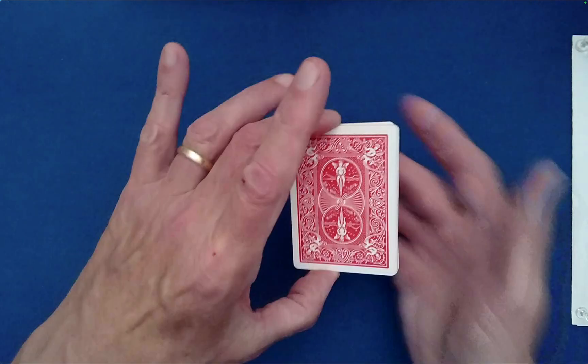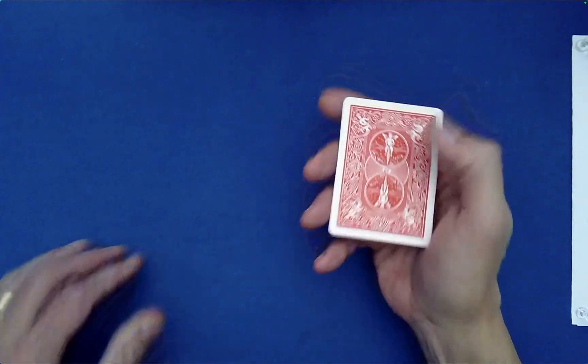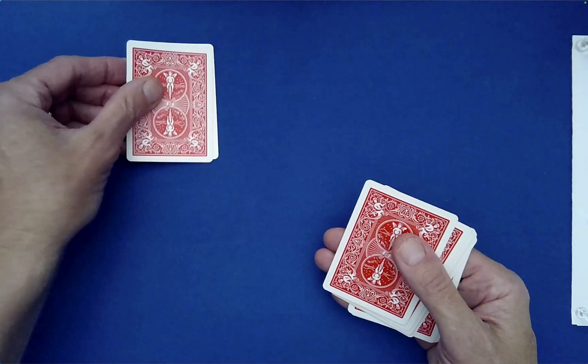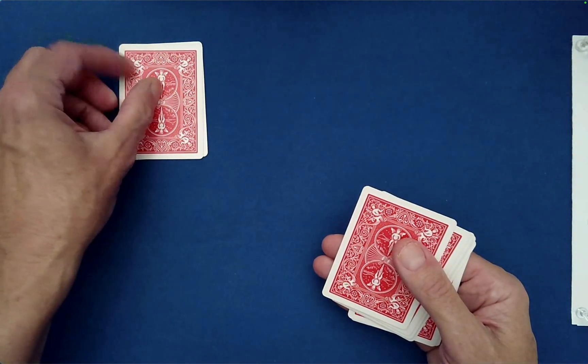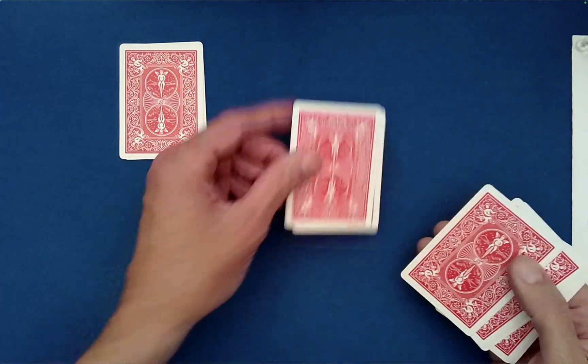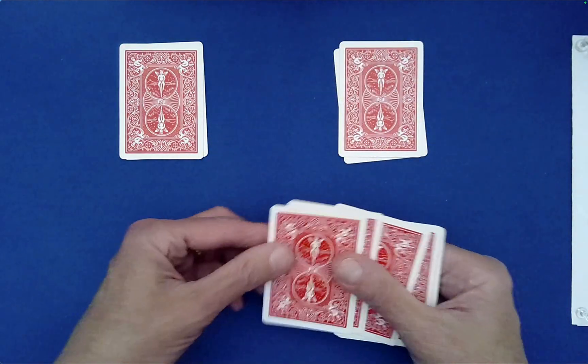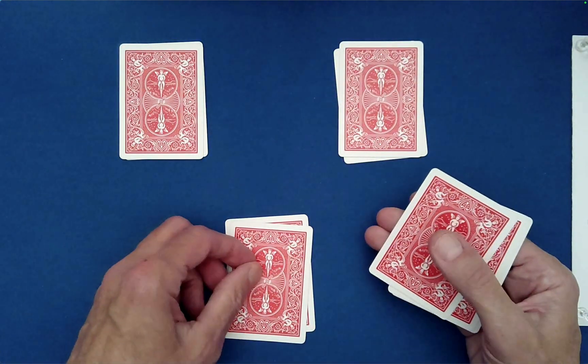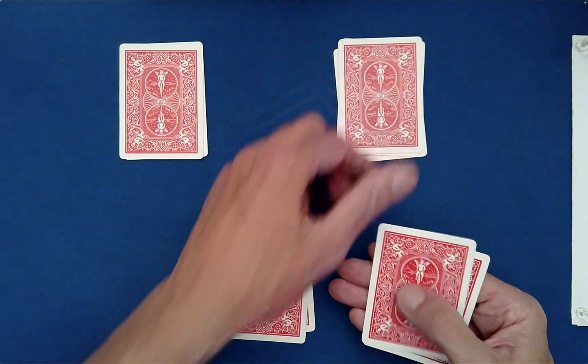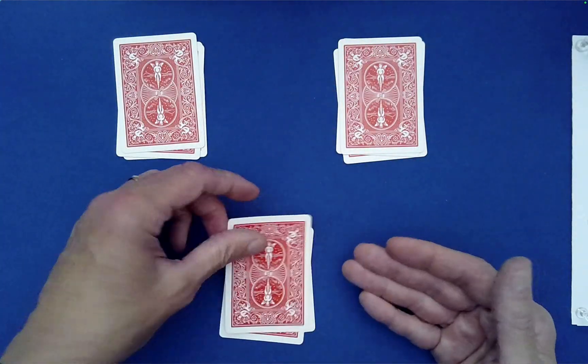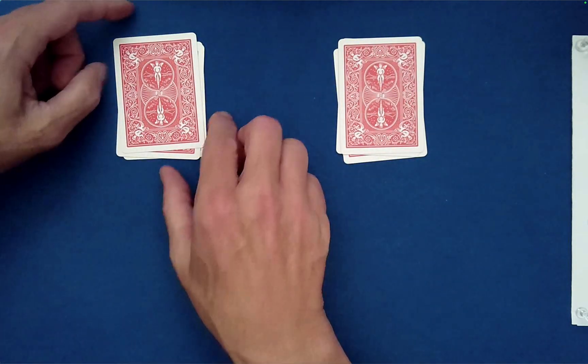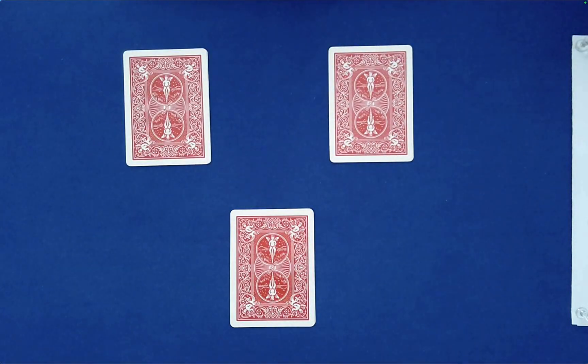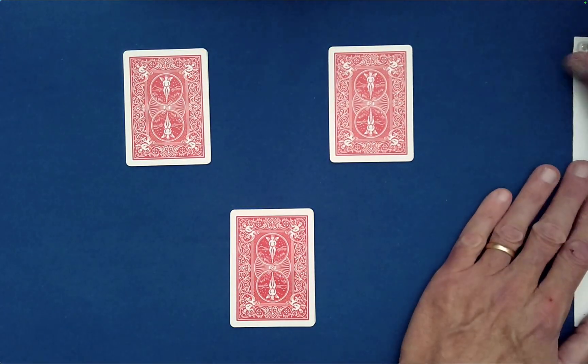All I'm going to do now is take these cards and push off the top two into one pile. Pile one. Next two, pile two. Next two, pile three. And then I'm just going to deal out: two, one, three. Off to the side, you'll probably notice that I have a written prediction. Let's just take a look at that.